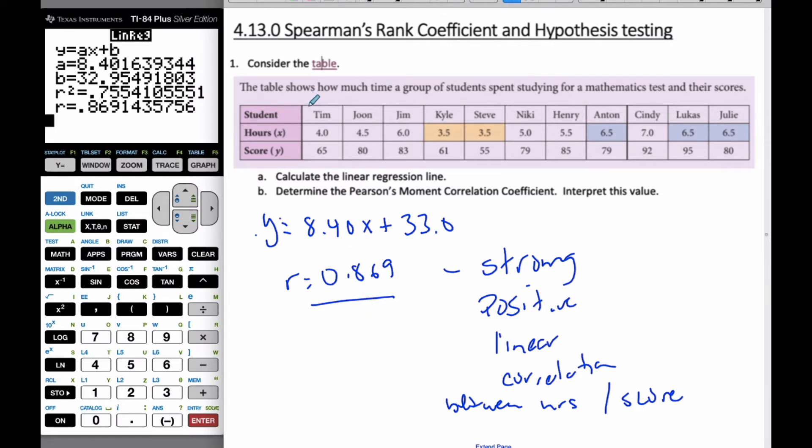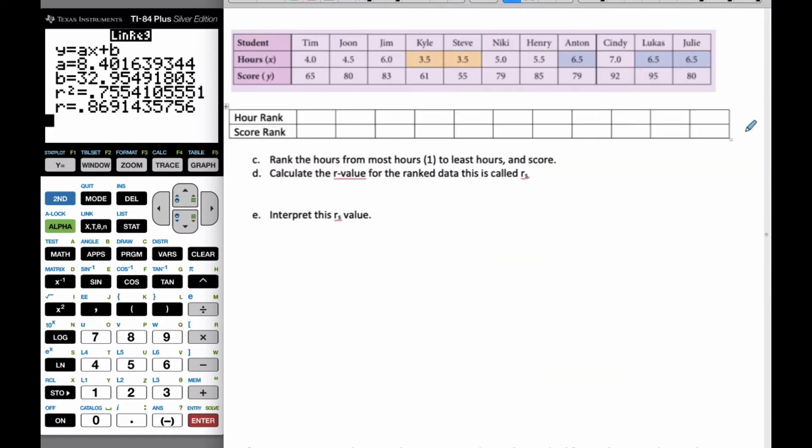Let's continue on through this scenario. I'm going to now find what is called the Spearman's rank coefficient. In order to do it, I'm going to rank all my hours from the most hours. The biggest value is number one. Cindy is number one. She studied the most.